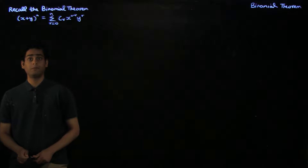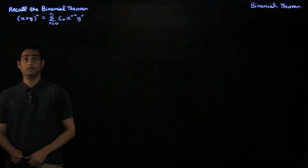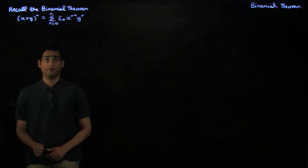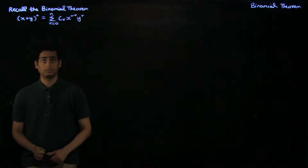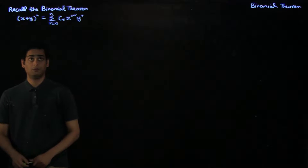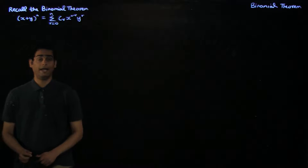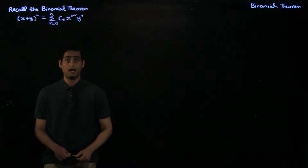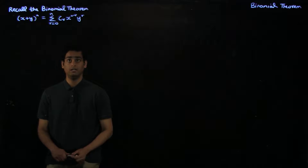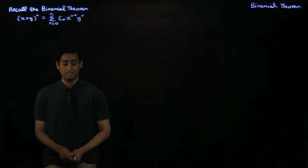So once again, to recap, the binomial theorem is given by x plus y to the whole power n equals summation r equal to 0 to n, nCr, x power n minus r, y power r, where cr is used to denote nCr.